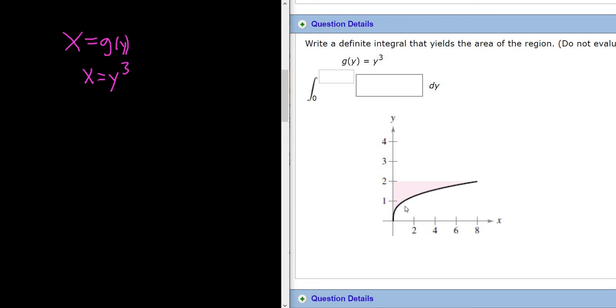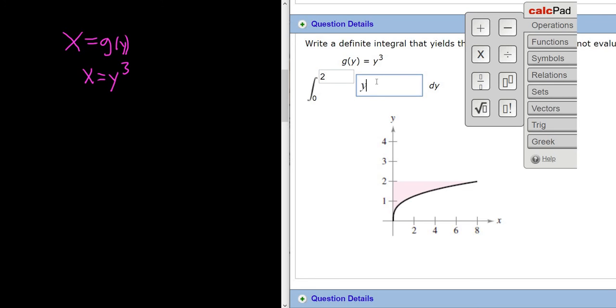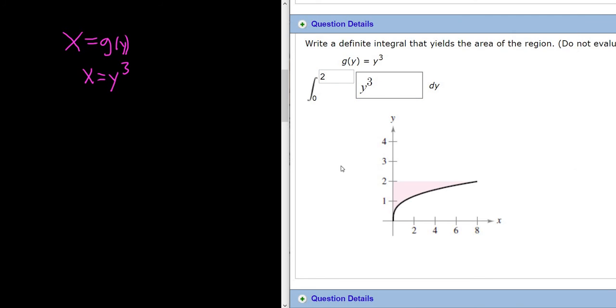And so we're integrating with respect to y, going from 0 to 2. These are y values, and we know that because it says dy. If it was x values, it would be 0 to 8. And then we just enter y cubed here. That should be the answer.